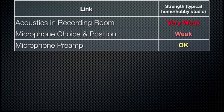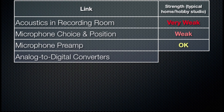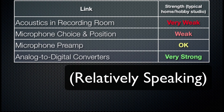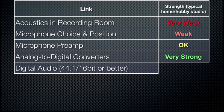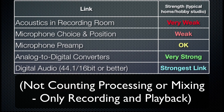We're just thinking about transparency. Then we've got analog-to-digital converters, and in the last five, six, seven years at the time of this recording, they've been very good. Even a cheap analog-to-digital converter will still be relatively transparent compared to the microphone or the acoustics in the recording room. Then we've got digital audio itself, and as long as you're at 44.1 kHz, 16-bit for your playback format — it is better to record at 24-bit — but at least at 44.1 kHz 16-bit, that's probably going to be the strongest link in a typical home or hobby studio chain.